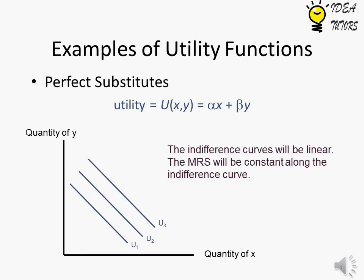Perfect Substitutes are goods that can be used in place of one another easily. The utility function for such goods is given by alpha times x plus beta times y. The indifference curves will be linear. The MRS will be constant along the indifference curve.